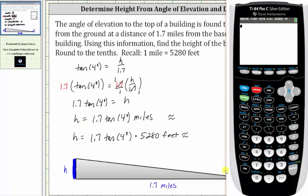And now for the height in miles, we have 1.7 times tangent 4 degrees. Again, this is the height in miles, which to four decimal places would be approximately 0.1189 miles. But again, the question asks for the height in feet,